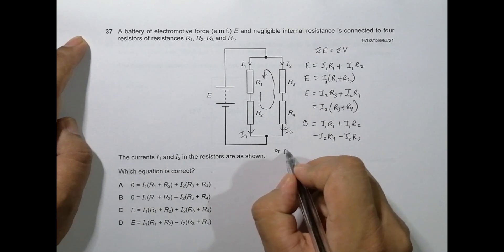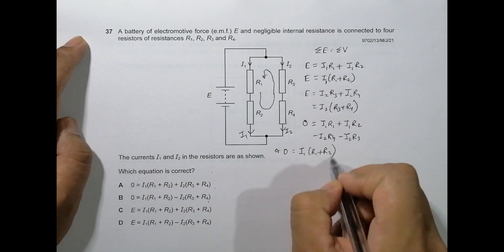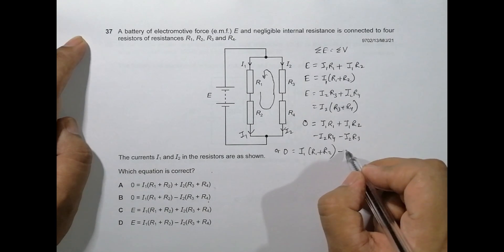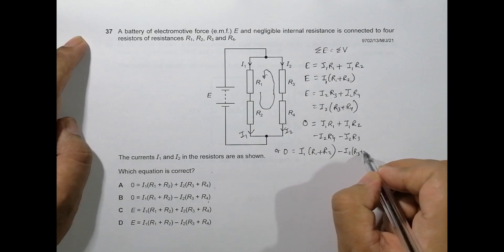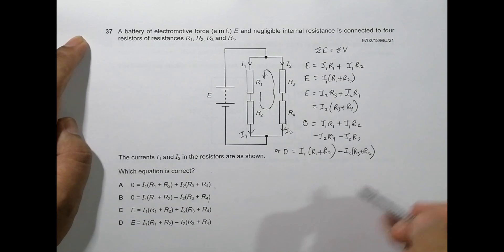If I take it as common, it becomes 0 = I1(R1 + R2) - I2(R3 + R4). So these are the only possible equations. On the reverse, I can make it plus and make it minus, and this is going minus zero which is again zero.